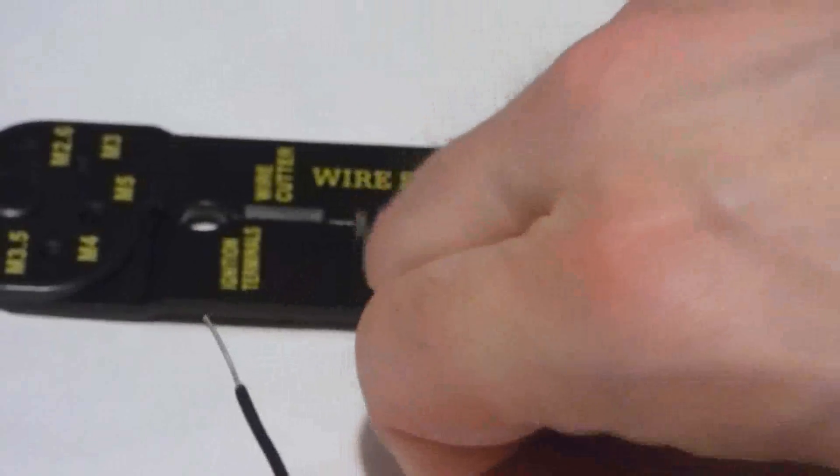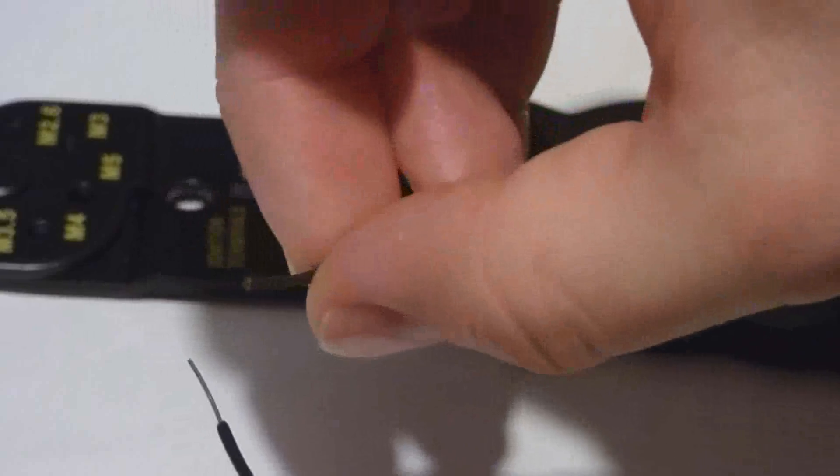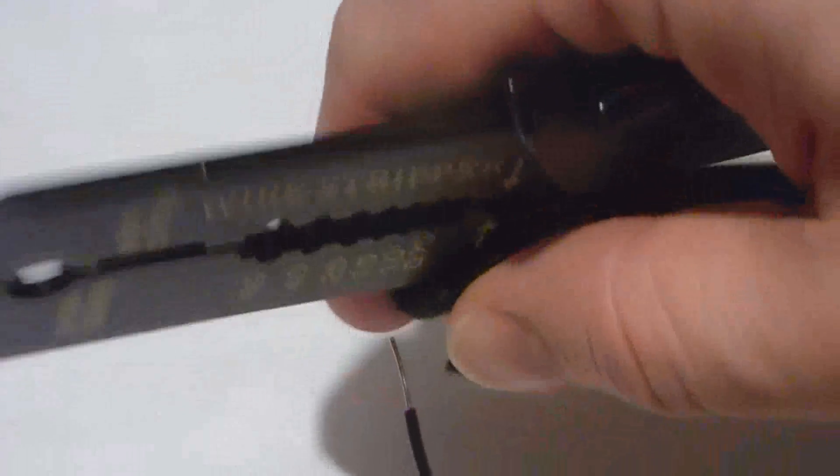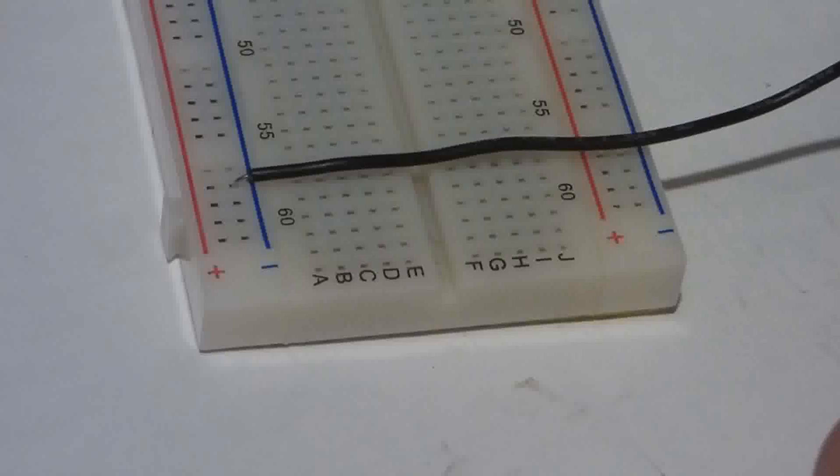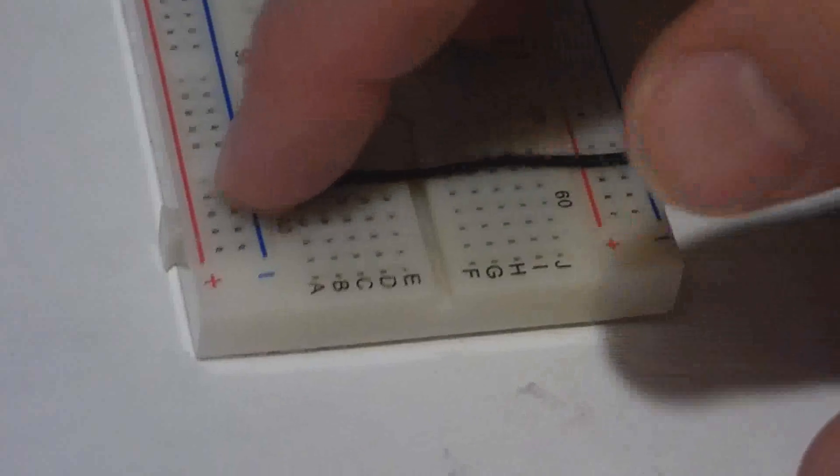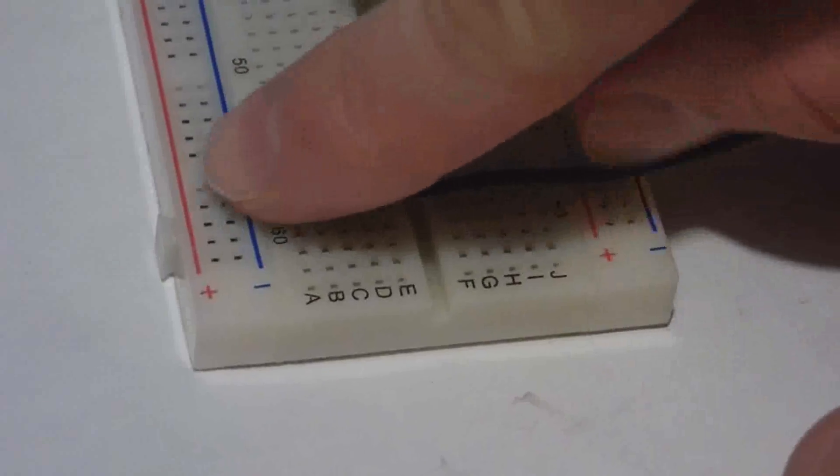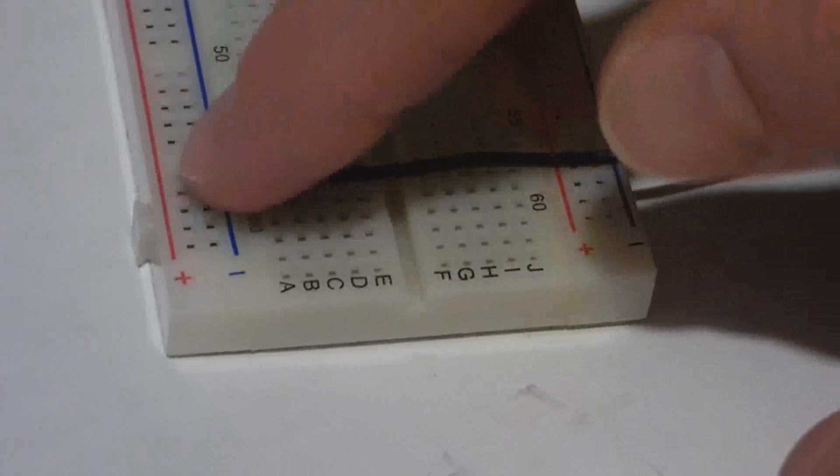Then you kind of got to wiggle it, work it off, and then at some point it'll just bounce off. So now as you can see here, that fits into the board pretty good. I got just a little bit of extra wire there but that's fine, and I'm gonna use the next tool to work on this end.